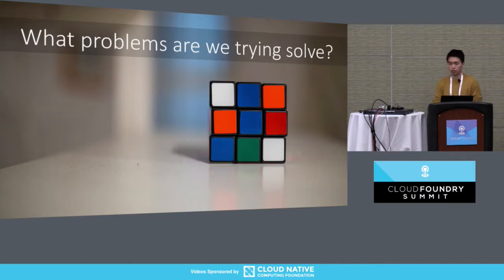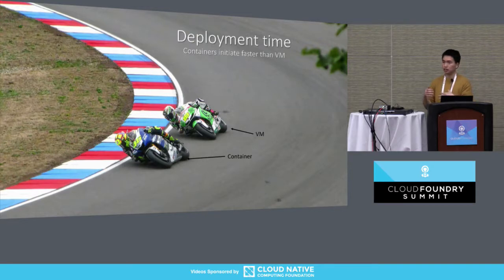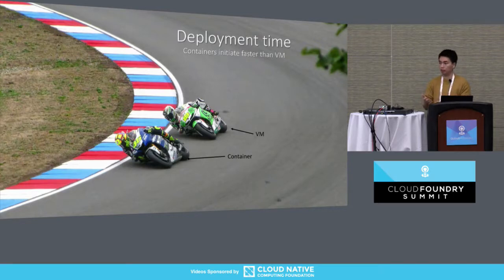So what problems are we trying to solve? The first one is deployment time. CF typically contains about 20 to 30 VMs, and the deployment time to spin up new VMs usually takes a lot of time. Containers are faster than VMs because you don't have to spin up the whole guest OS or kernel again — you share the same OS and kernel with the whole system. So containers can save us a lot of time for deploying the CF cluster.